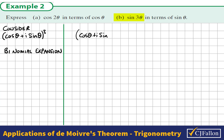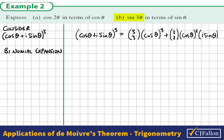So we have (cosθ + i sinθ) to the power of 3. Using the binomial expansion, this becomes ³C₃ cos³θ plus ³C₂ cos²θ · (i sinθ) plus ³C₁ cosθ · (i sinθ)² plus ³C₀ · (i sinθ)³.